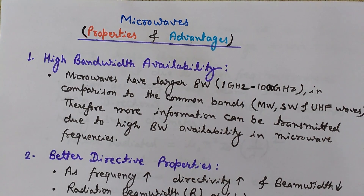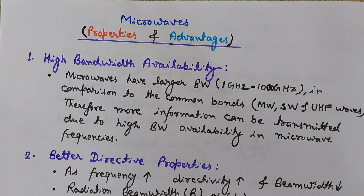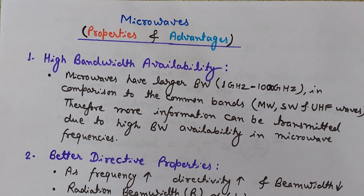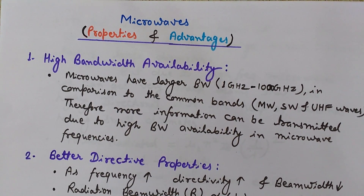The first property is high bandwidth availability. Microwaves have a larger bandwidth — one gigahertz to one thousand gigahertz — in comparison to common bands like MW, SW, and UHF (medium wave, short wave, and ultra high frequency waves). Therefore, more information can be transmitted due to high bandwidth availability in microwave frequencies.